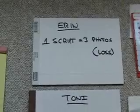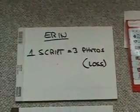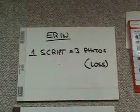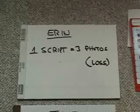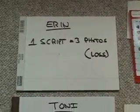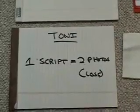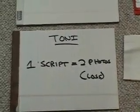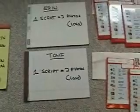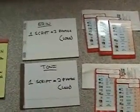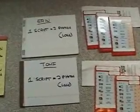Now let's see who has comparative advantage. For Erin, if she fills one prescription, that means three photos she can't do — that's her opportunity cost, or loss. Tony, if she fills one prescription, she only loses two photos. Since she loses less, Tony actually has the comparative advantage in filling prescriptions — she lost less when doing the prescription. Erin still has absolute advantage in both tasks, but Tony has comparative advantage in prescriptions, which means Erin automatically has comparative advantage in photos.